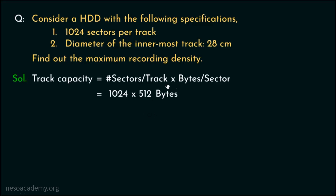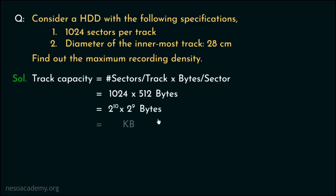We already learned about this in the session on secondary memory hard disk drives. So, 1024 is 2 raised to the power 10 and 512 is 2 raised to the power 9. Now, 2 raised to the power 10 bytes is 1 kilobyte and 2 raised to the power 9 is 512. So the track capacity is 512 kilobytes.